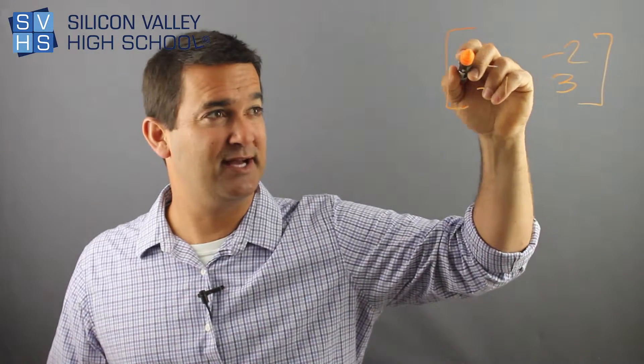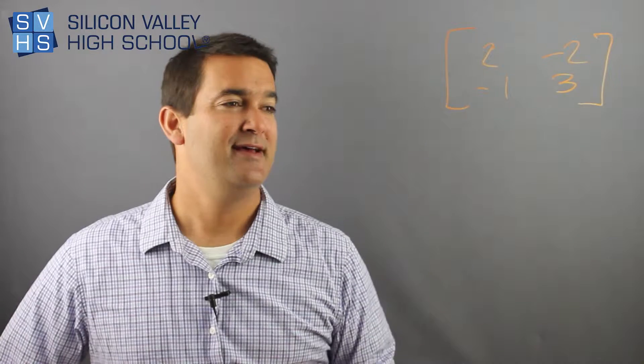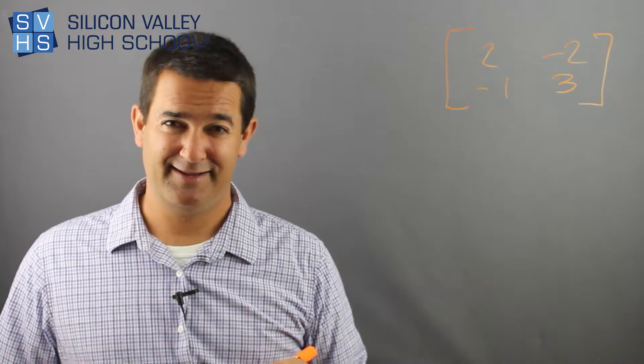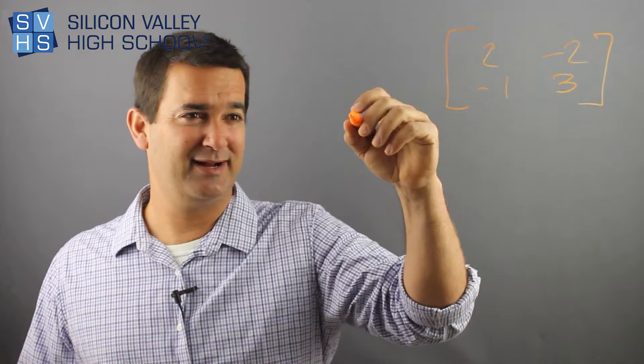This is a 2x2 because look, it's got two down and two over, right? So two by two. And now this is the formula for the inverse of a 2x2 matrix. It's not going to make sense. Don't get all upset at first.